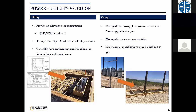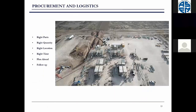Power can come from a utility or a co-op. Utilities are usually larger and more organized — they'll say here's a drawing set and a spec you've got to follow. A co-op says, we put in something similar last year, go look at what we put in and we'll just do that again. So how you get your information to design your system differs. Procurement and logistics: right parts, right time, right quantity, right location — plan ahead, follow up. Logistics is absolutely critical. There were hundreds of millions of pounds of steel in this project.